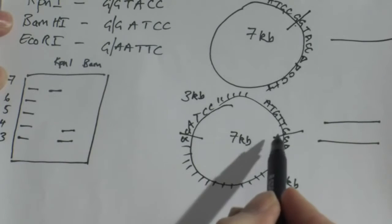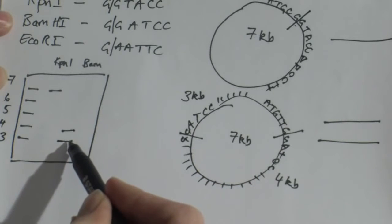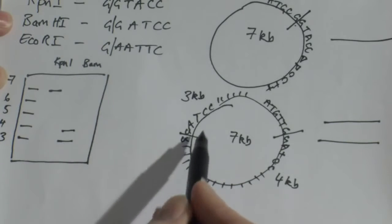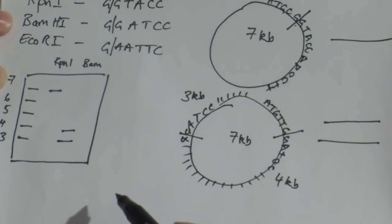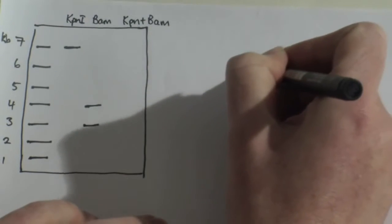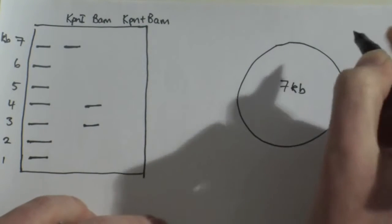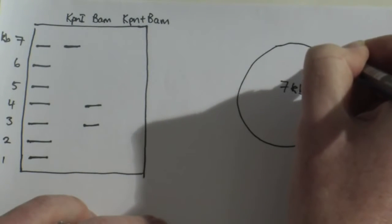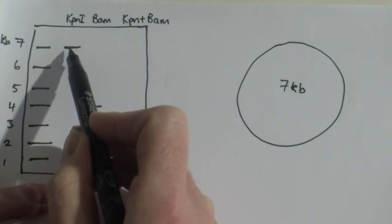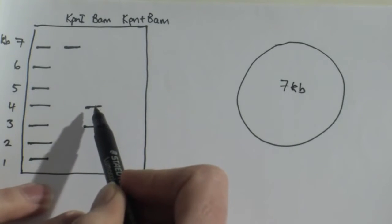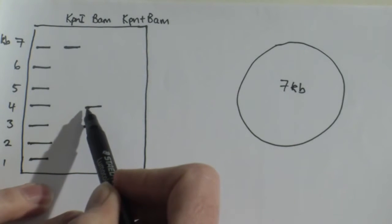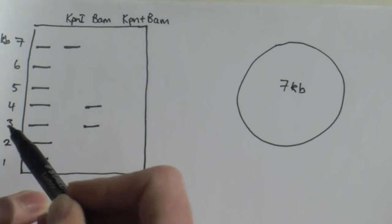And we can see that the two fragments here that were cut with BAM H1 add up to give me the 7kb that is the total sum of the plasmid. The complication arises when I do a double digest of that circular plasmid. So we're looking at the same plasmid that we were looking at earlier, it's 7kb in size. I know that my KPN1 cut in one position and gave me a 7kb fragment. And I know that my BAM H1 cut in two positions and gave me two bands, one of them 4kb and one of them 3kb.